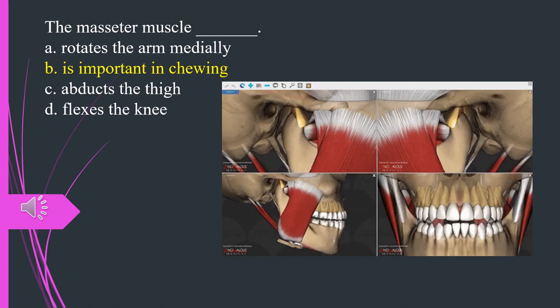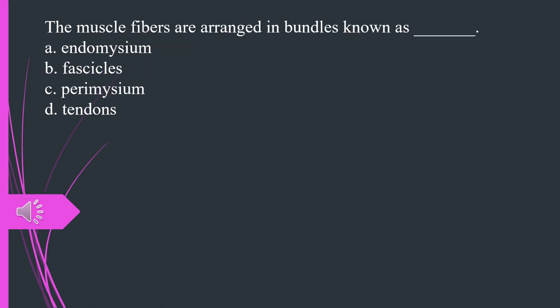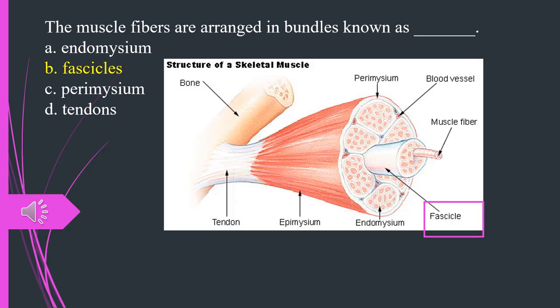The muscle fibers are arranged in bundles known as A. Endomysium. B. Fascicles. C. Perimysium. D. Tendons. The answer is B. Fascicles.